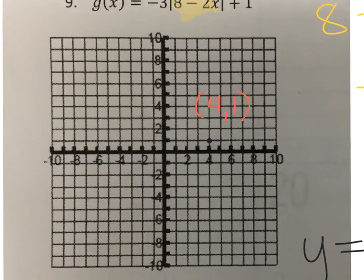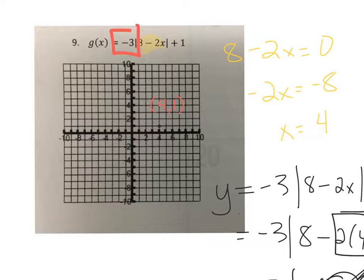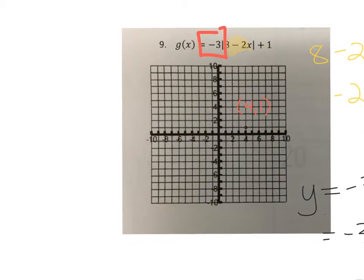Okay, so there's the vertex at 4, 1. And now we know there's a negative in front. So from our transformations, that's going to tell us that the graph will be going down. So let's figure out where some points are so we can plot some things.